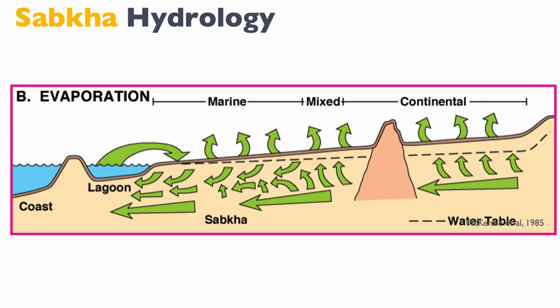During the summer dry period, something else happens: evaporation. Because we have a lot of evaporation, we will have evaporation of the meteoric water on the continental sabkha and evaporation of the marine water on the coastal sabkha. In the middle, we can have a mixed zone with a mix of continental and marine water. Because of evaporation, we tend to concentrate ionic species in those fluids, which creates potential for diagenesis. The two fluids are initially different, so the type of diagenesis we expect will also be different.